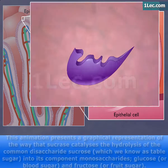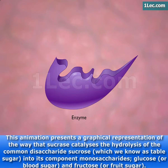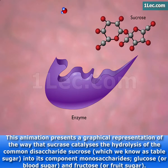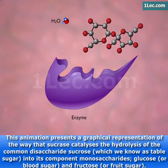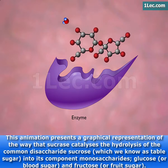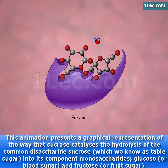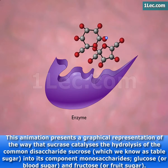This animation presents a graphical representation of the way that sucrase catalyzes the hydrolysis of the common disaccharide sucrose, which we know as table sugar, into its component monosaccharides — glucose, or blood sugar, and fructose, or fruit sugar.